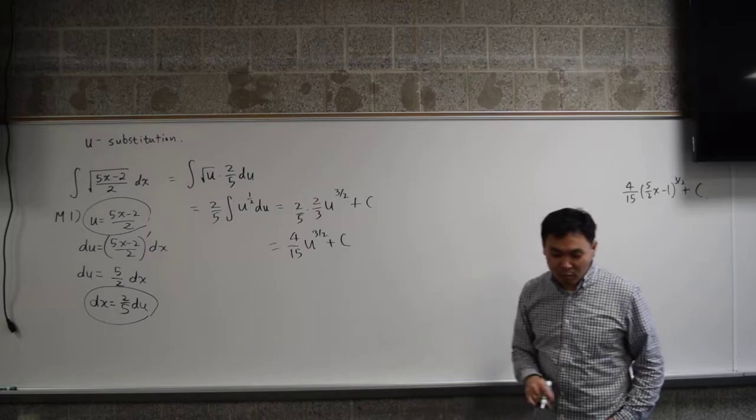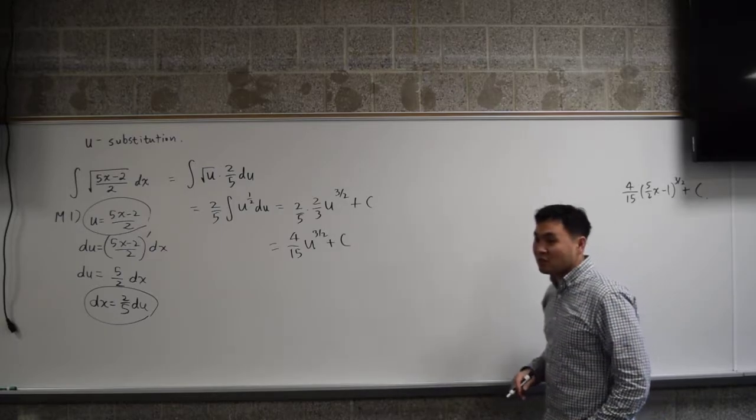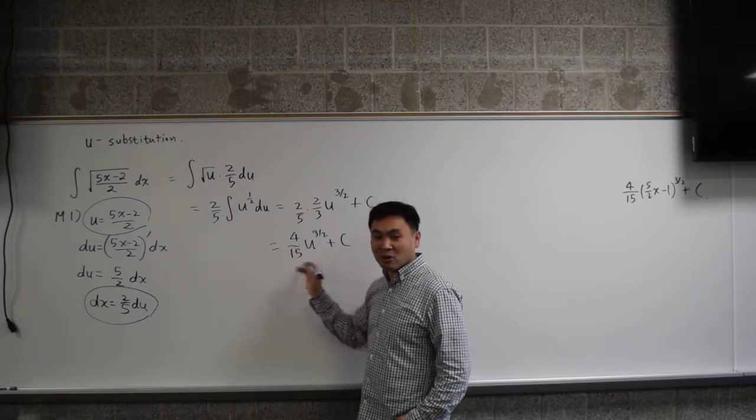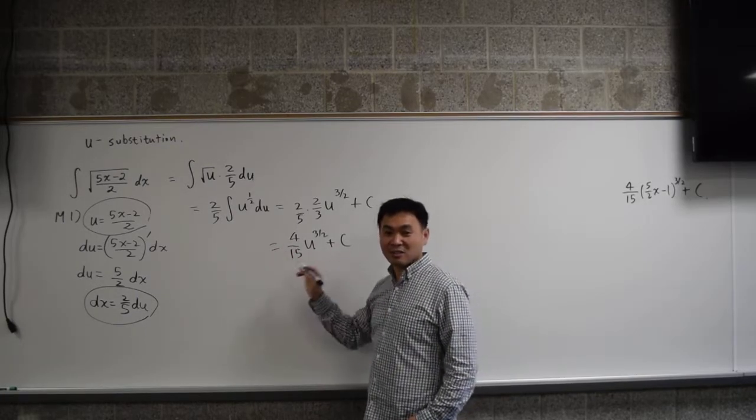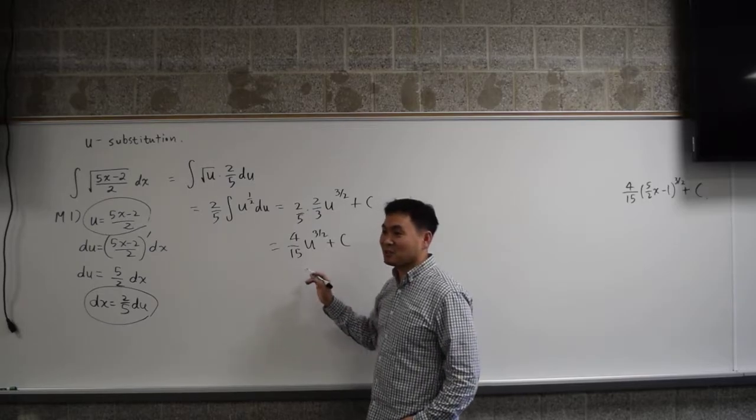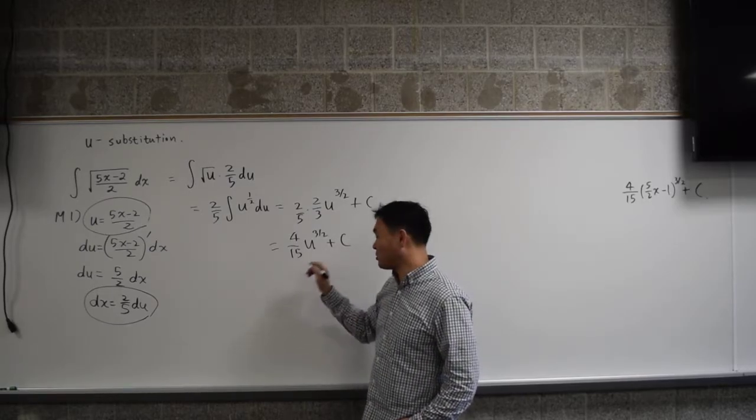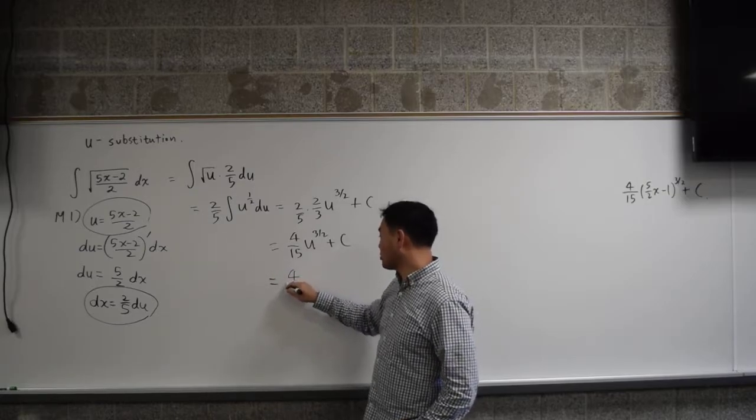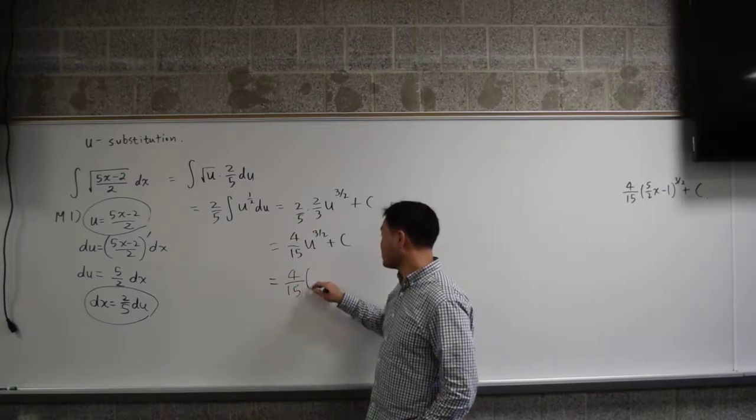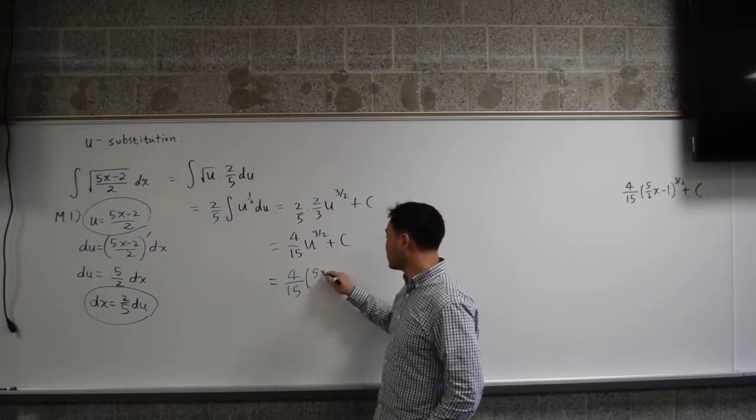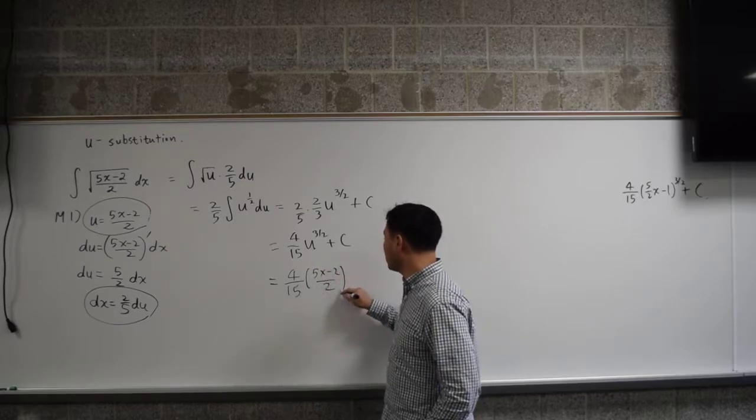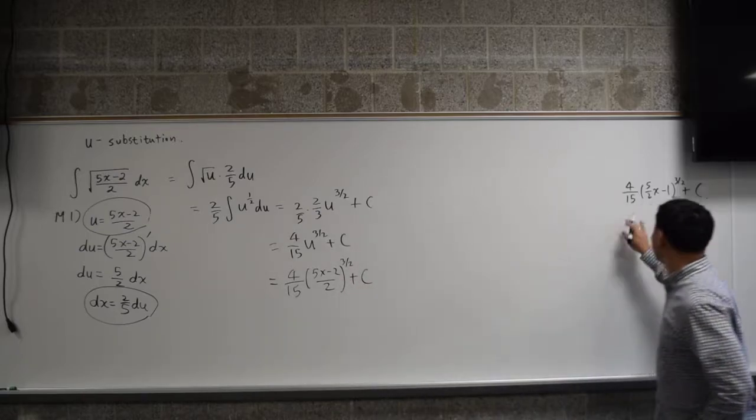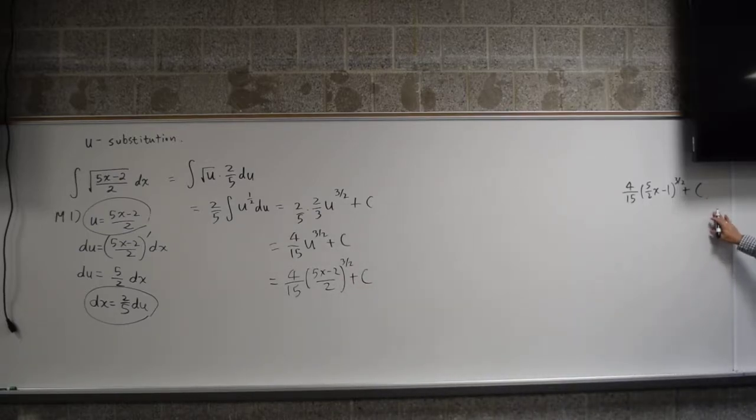And the problem with u-substitution is many times people get overly excited that they found some results, but they stop right here and get points off. It will be sad if you stop. What do you have to do after this? You have to do 4 over 15, 5x minus 2 over 2, to the 3 over 2 power plus c, which is exactly the same as this result we had.